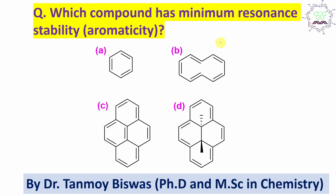I believe you have tried, so let's start. Now if you look at which compound has maximum resonance stability, or which compound is maximum aromatic — and aromaticity means stabilisation — so which is more stable? That could be another way of asking this question.